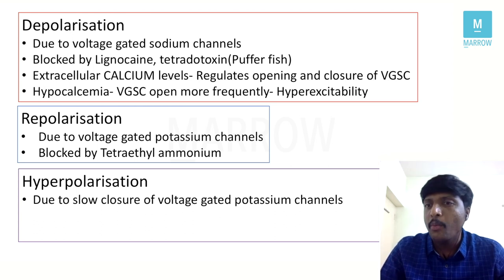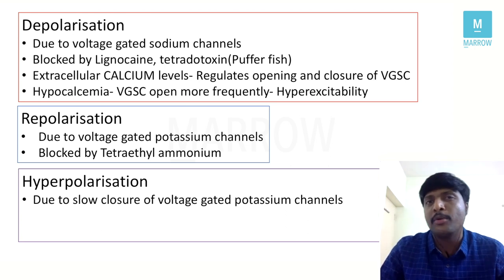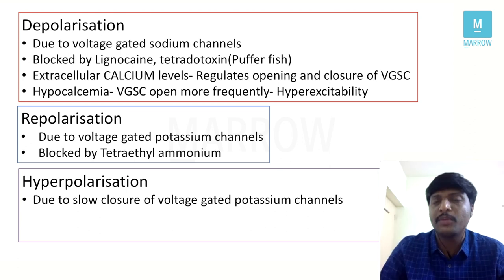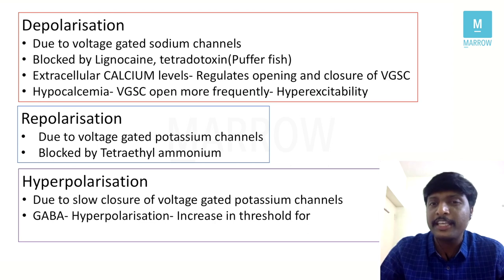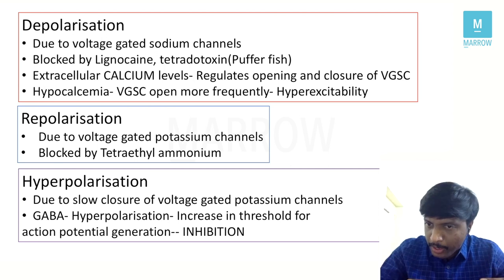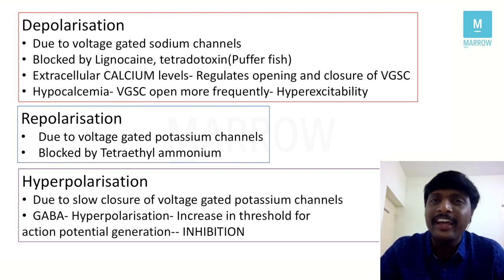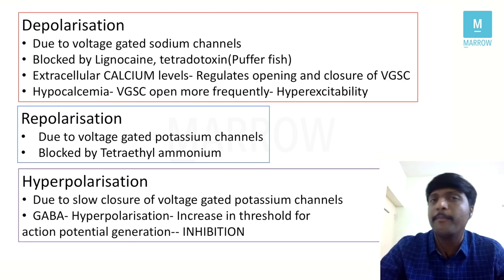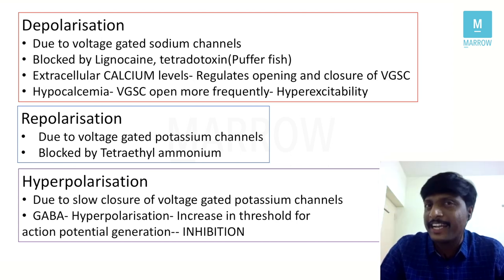One particular neurotransmitter produces all its effects by causing hyperpolarization. That inhibitory neurotransmitter is GABA — it causes hyperpolarization. Because of this hyperpolarization, there is an increase in threshold for action potential generation, since the RMP is further lowered. Hyperpolarization always means inhibition — that is the take-home point. GABA is the neurotransmitter that causes hyperpolarization.